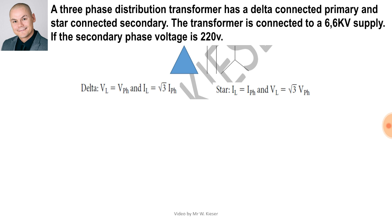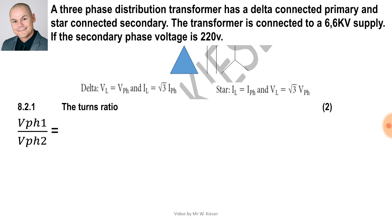Next question: a three-phase distribution transformer has a delta connected primary and a star connected secondary. The transformer is connected to a 6.6 kilovolt supply. If the secondary phase voltage is 220 volts, we're going to calculate the turns ratio. When working with the turns ratio, remember we use phase values, so it's V phase one over V phase two. Since primary is delta connected, VL1 equals V phase one, giving 6600 volts. V phase two is 220 volts. Therefore 220 goes into itself once and into 6600 thirty times, giving a turns ratio of 30 to 1.